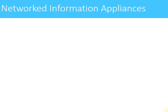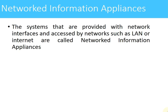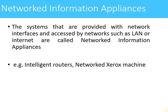The next type is networked information appliances. In these systems, they are connected to network interfaces and can be accessed using LANs or the internet. Any system connected to the internet or a LAN network can be called a networked information appliance. Examples include intelligent routers or networked xerox machines. A networked xerox machine is connected to several PCs on the network, and you can give a printout from any of those PCs to that machine.